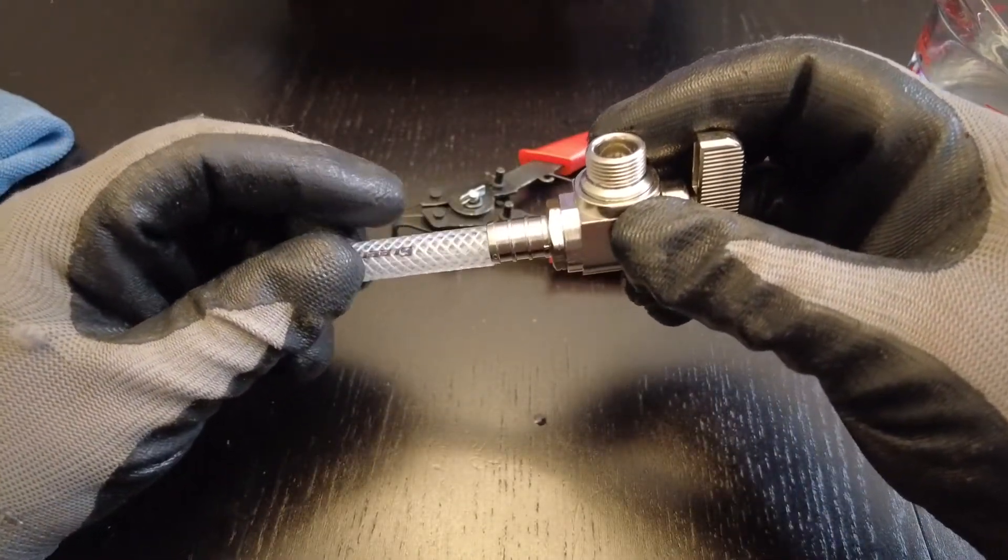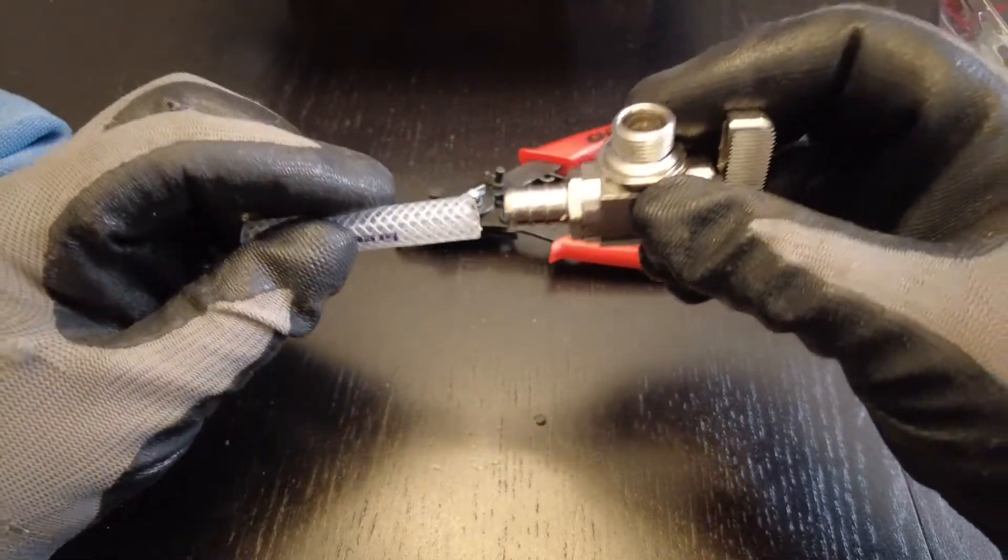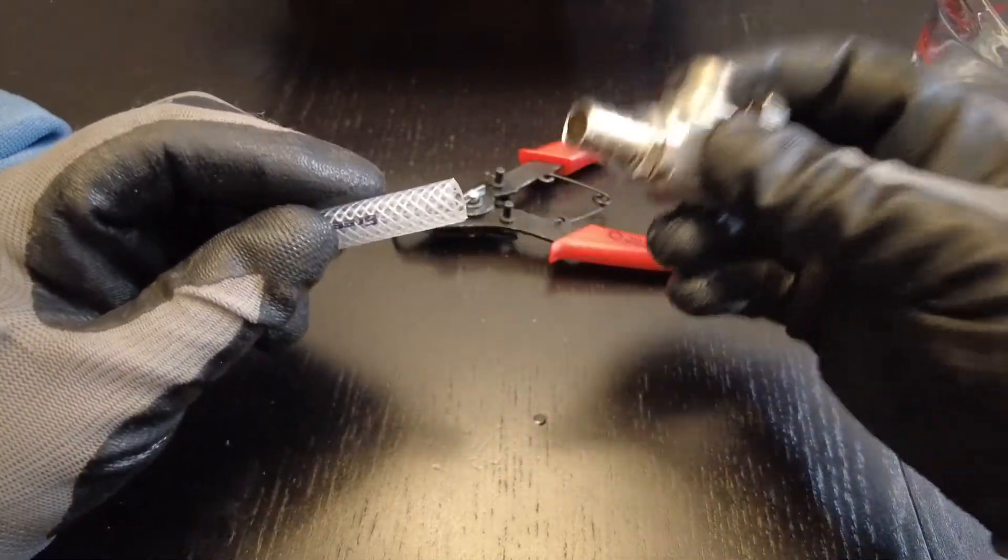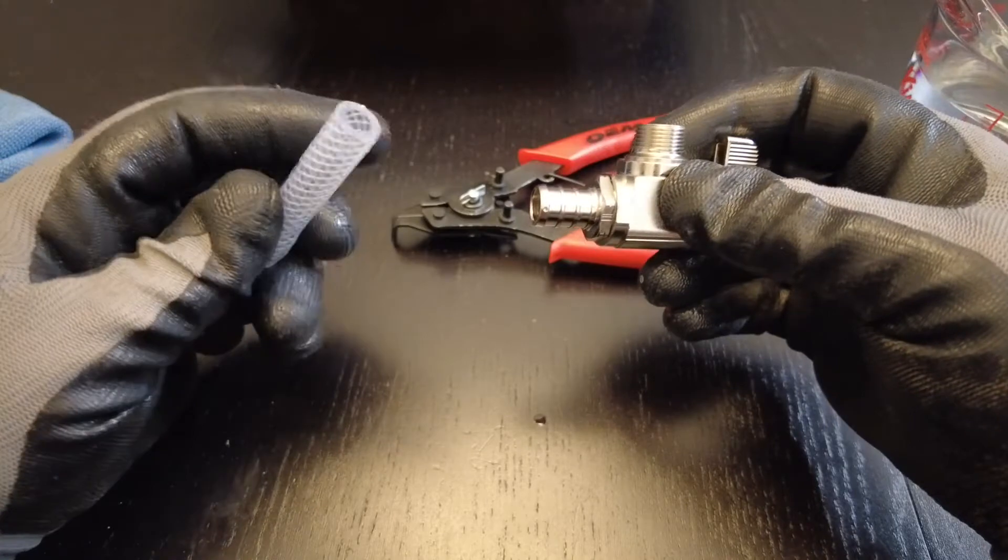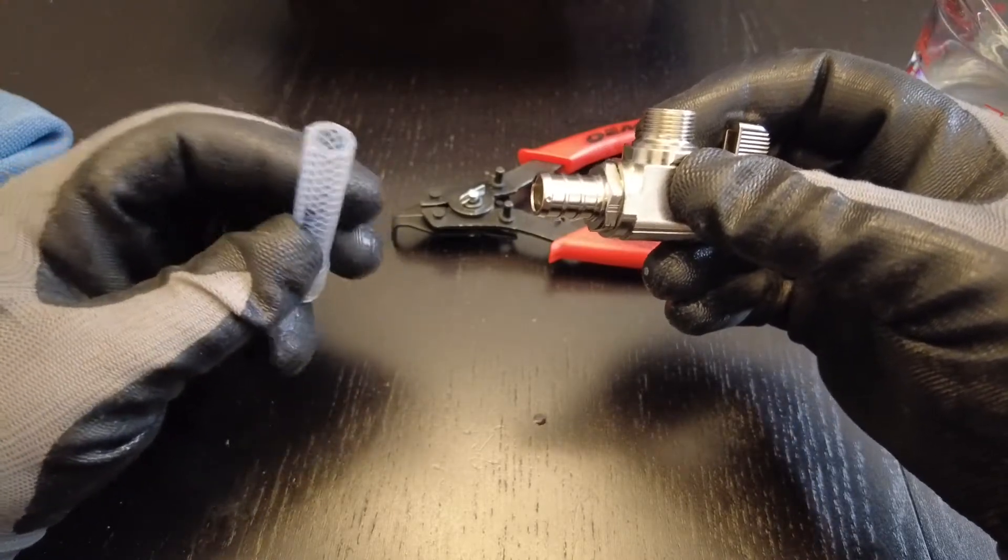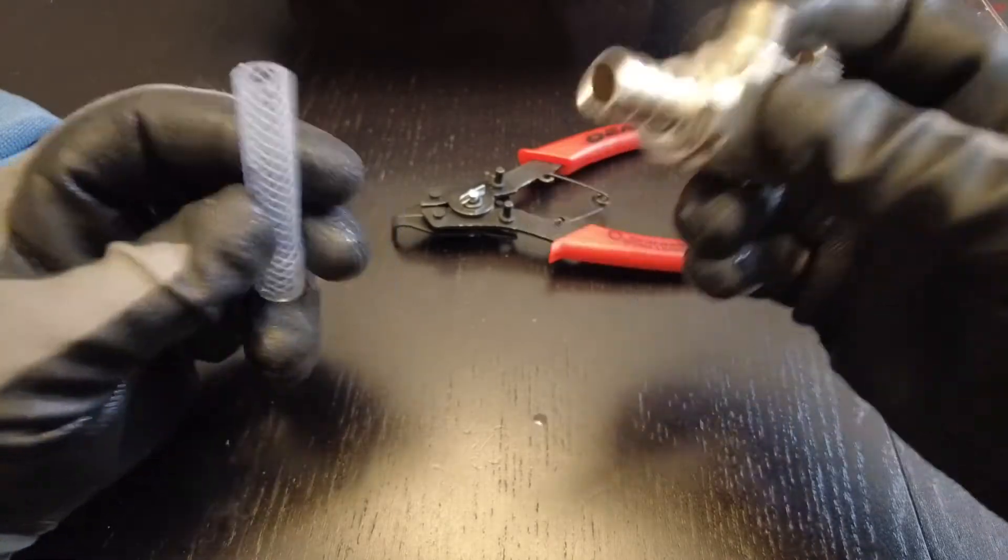As you can see, the vinyl tubing that I have on the left is the same diameter as the metal PEX shutoff valve on the right. I'm unable to find any sort of adapter that will allow me to make the transition from the two materials and sizes.